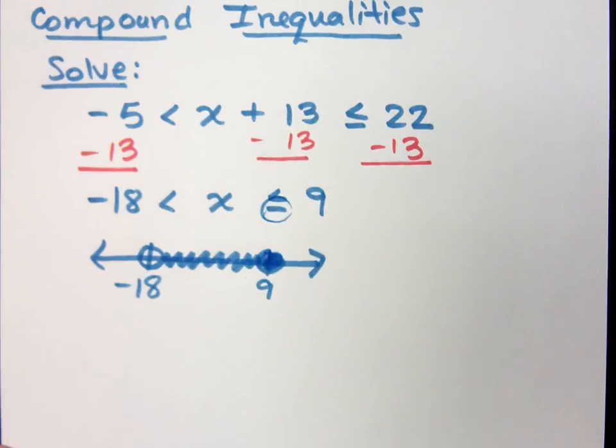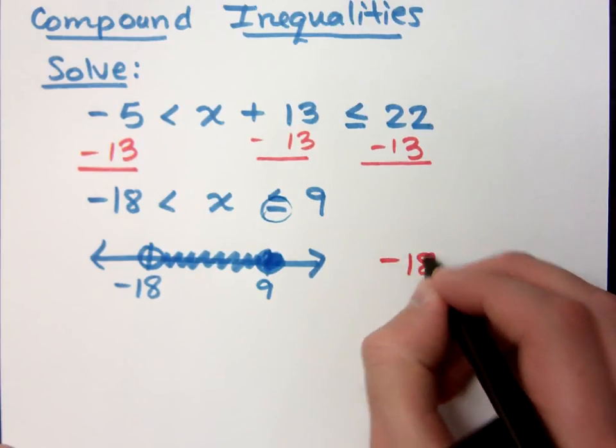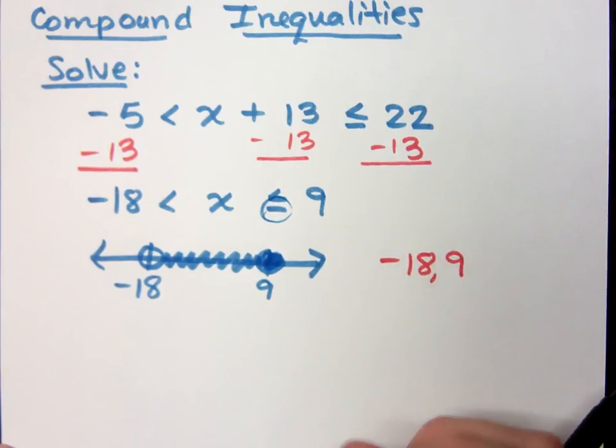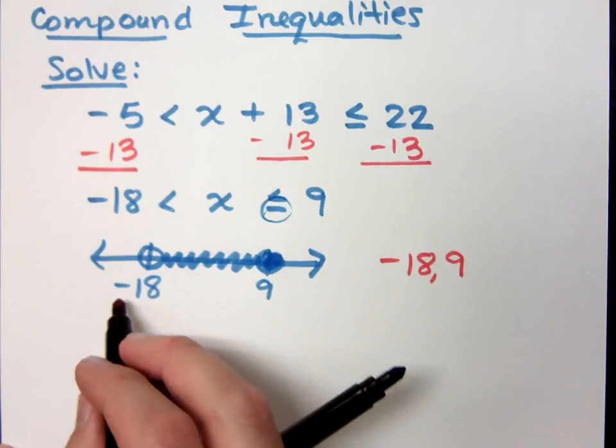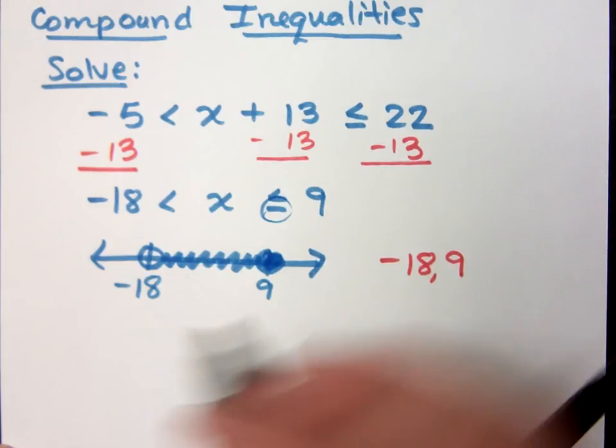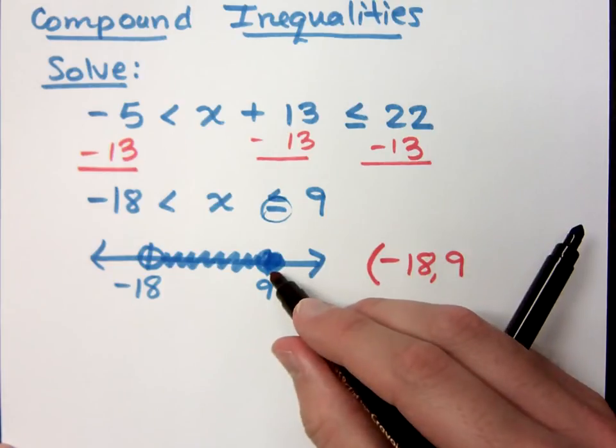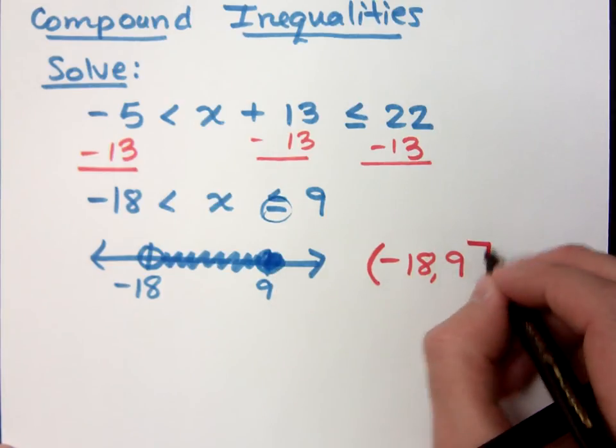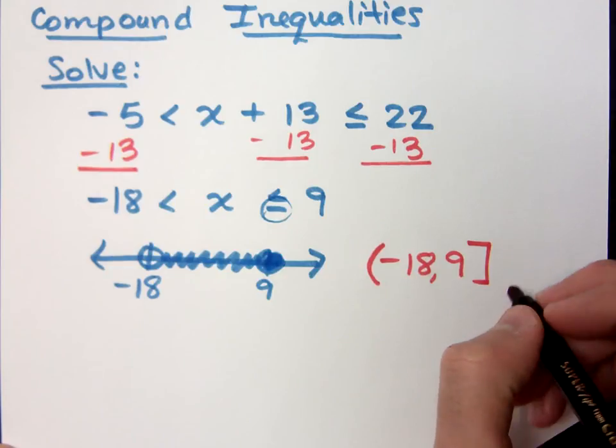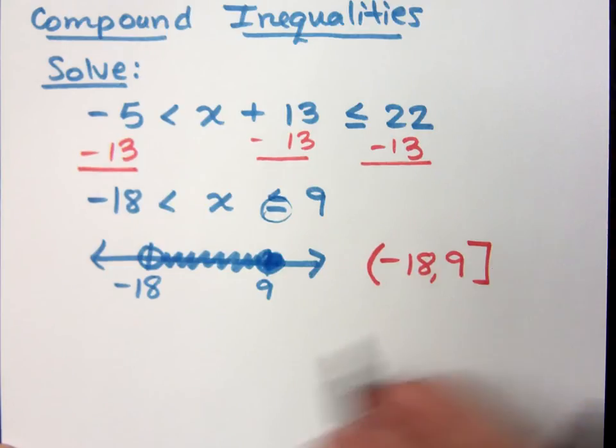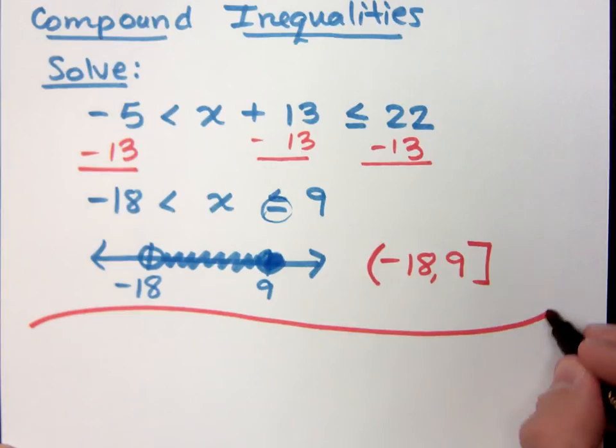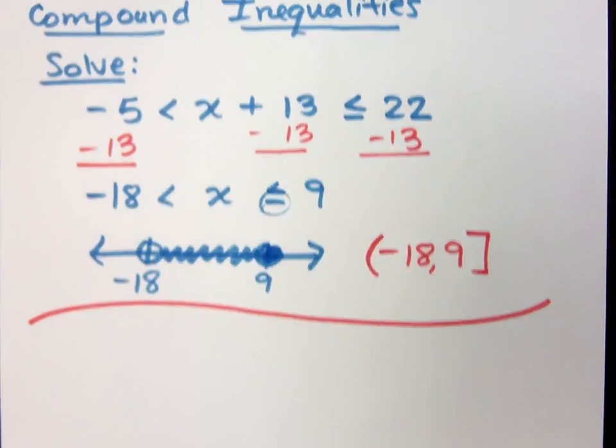And then when I write my interval notation, I'm going from negative 18 to positive 9. And since I'm not including negative 18 and it's open, I use parentheses. Since 9 is included and I've got a closed circle, I use a bracket. Okay? Let's try another one of these.